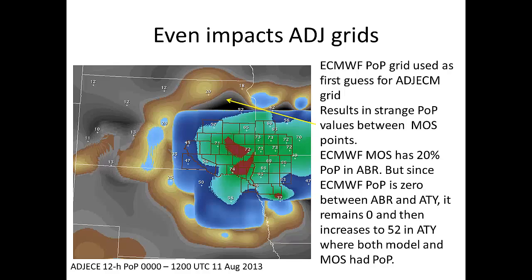But I think even worse than that is that it's actually affecting the ADJs. Here is the ADJ ECMWF — not HECM, sorry — it's actually the ECE for that same period. You can see some pretty strange outcomes because it's using the ECMWF deterministic model SmartTool as a first guess field for the ADJ. So you have here, if you look in northern South Dakota, you see a 52% POP by Watertown, which is north of our CWA, then basically a zero POP. And then because the ADJ ECMWF MOS has a 20% POP in Aberdeen, which is a little farther north, you get a bullseye of 20% up there — a very discontinuous field that's not really realistic with how the POP should look. You end up with these weird numerical holes in POP.